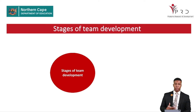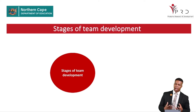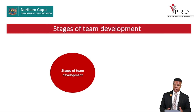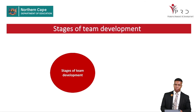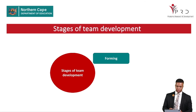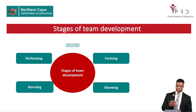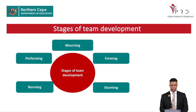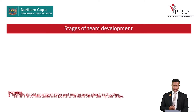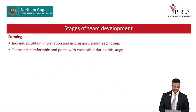Now we move to the five stages of team development. The stages of team development describe the process of developing a team when perhaps no team existed before — the manager selects members and allows them to form a group. The stages are: forming, storming, norming, performing, and adjourning.